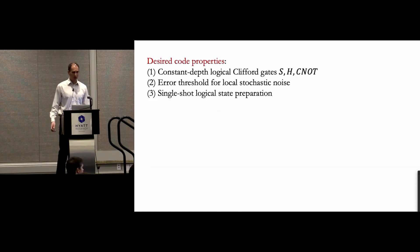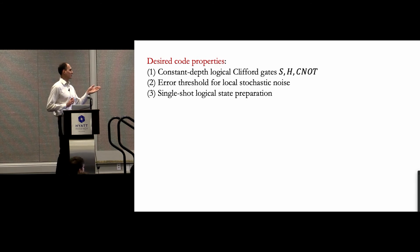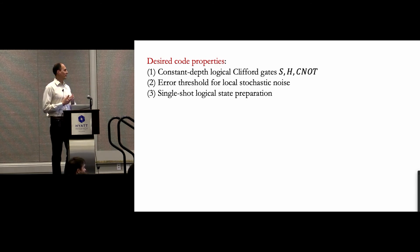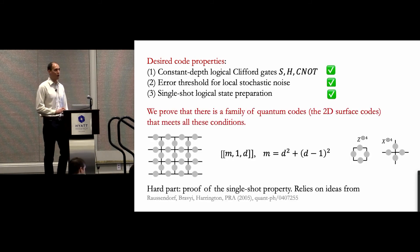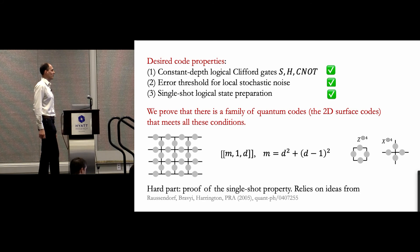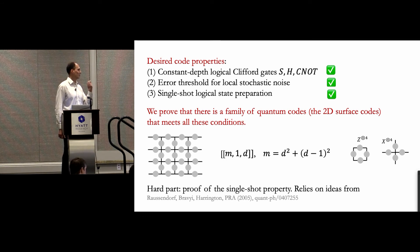We want a quantum code combining all these properties: constant depth implementation of logical Clifford gates, an error threshold for local stochastic noise, and single-shot logical state preparation. Luckily, there is indeed a code meeting these properties: the surface code. A distance-d surface code encodes one logical qubit in roughly 2d² physical qubits. Here I show the parity checks. The hard part is proving the single-shot state preparation property, and I don't have time to go into details.